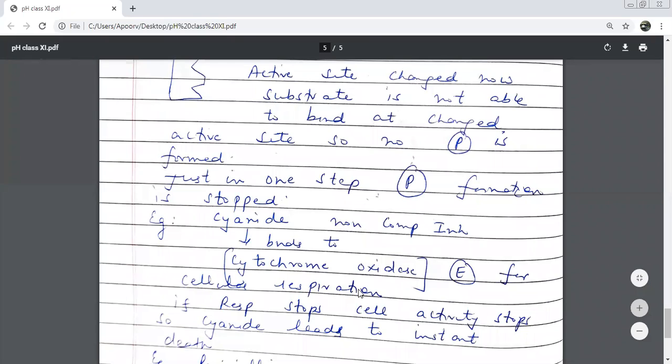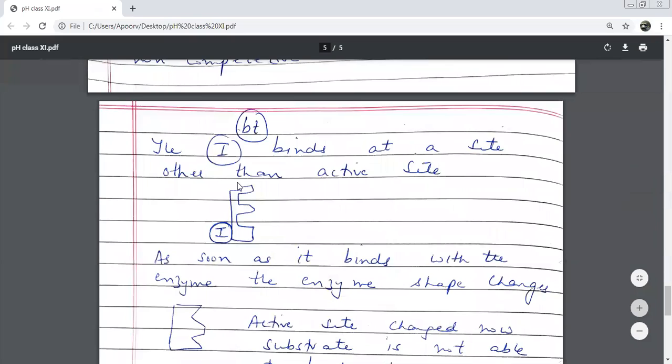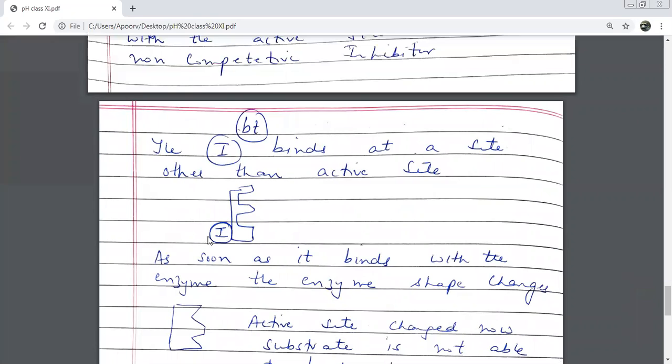This is the name of the enzyme, cytochrome oxidase. We consider this enzyme. And what is the inhibitor here? Which example I'm giving you? Cyanide.